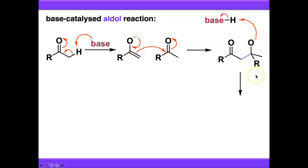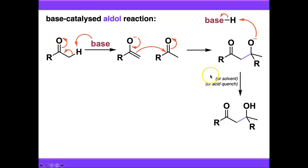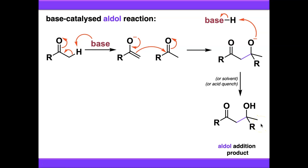Alternatively you might be in a protic solvent or get an acidic quench — it depends on what protocol you're using — but basically there's going to be a source of protons somewhere so you can stick this proton on to form this alcohol. This is called the aldol addition product, and in some situations it's possible to isolate these, depending largely on the substrate and the reaction conditions.